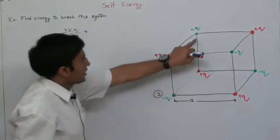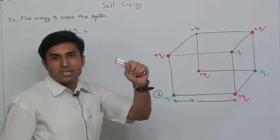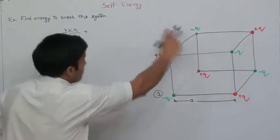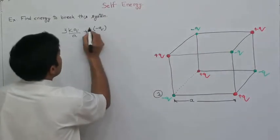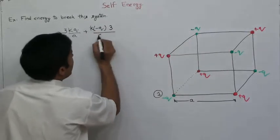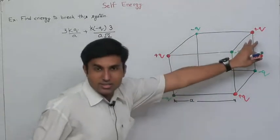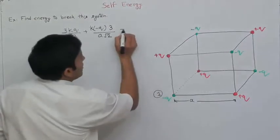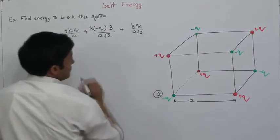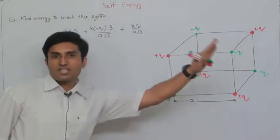Plus, these three negative charges are at equal separation. The separation is how much? A root 2, the diagonal length. Charge is opposite, so minus q times three divided by a root 2. Now this body diagonal charge is at distance a root 3, so plus Kq by a root 3. This is the total potential at point one because of the remaining charges.